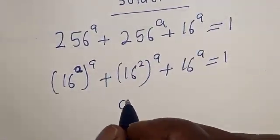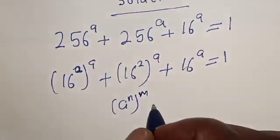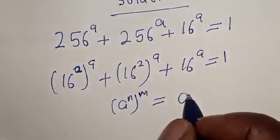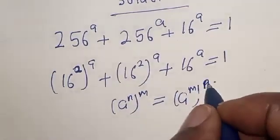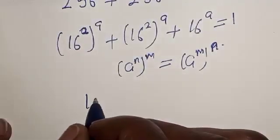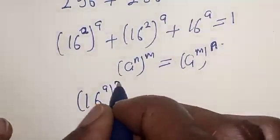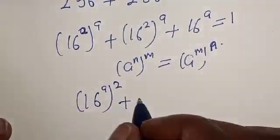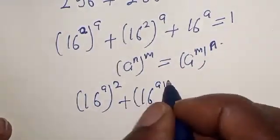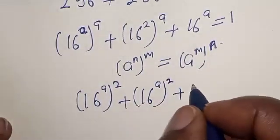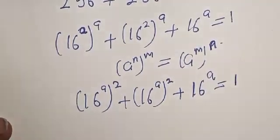Note that a raised to power n raised to power m is equal to a raised to power m raised to power n. Applying this, we get 16 raised to power a squared plus 16 raised to power a squared plus 16 raised to power a is equal to one.